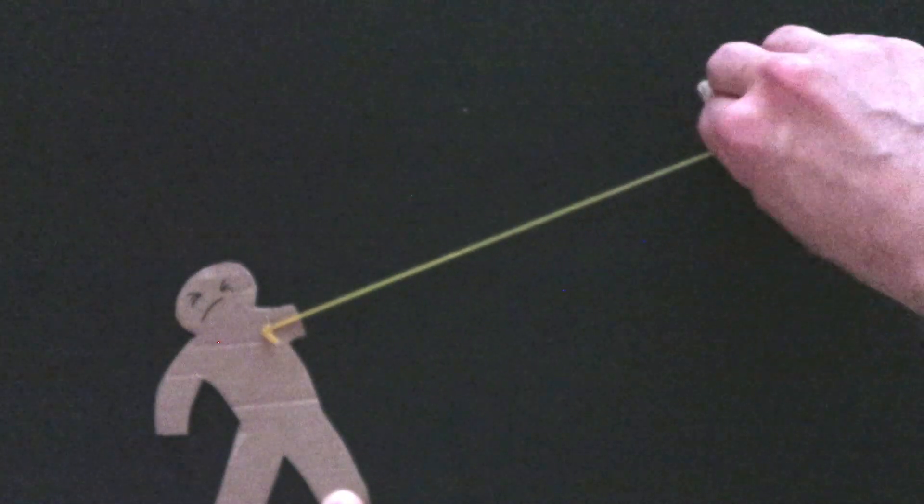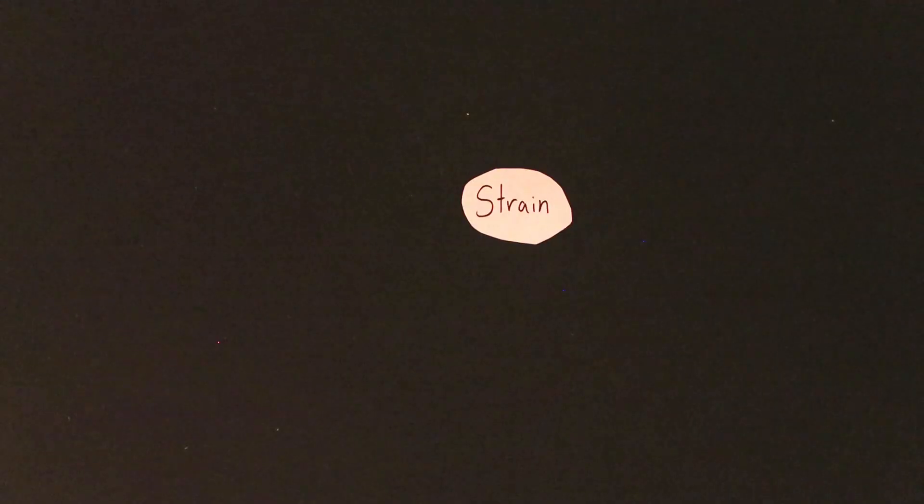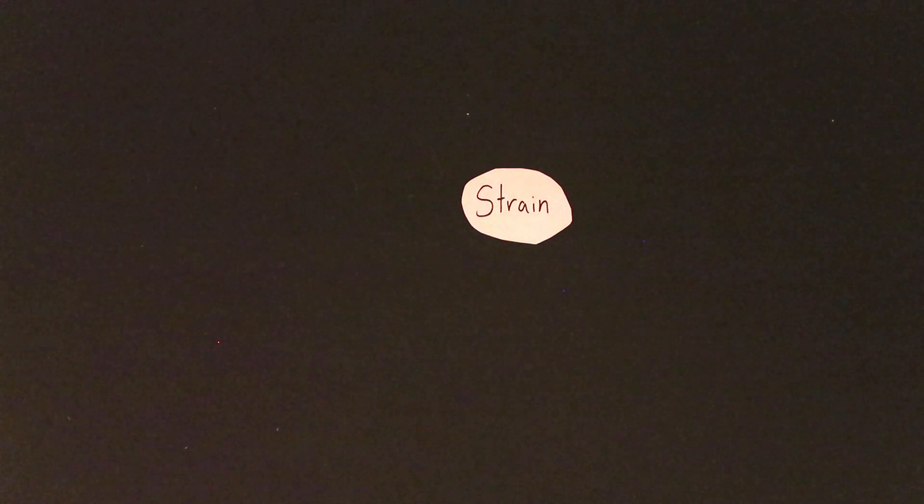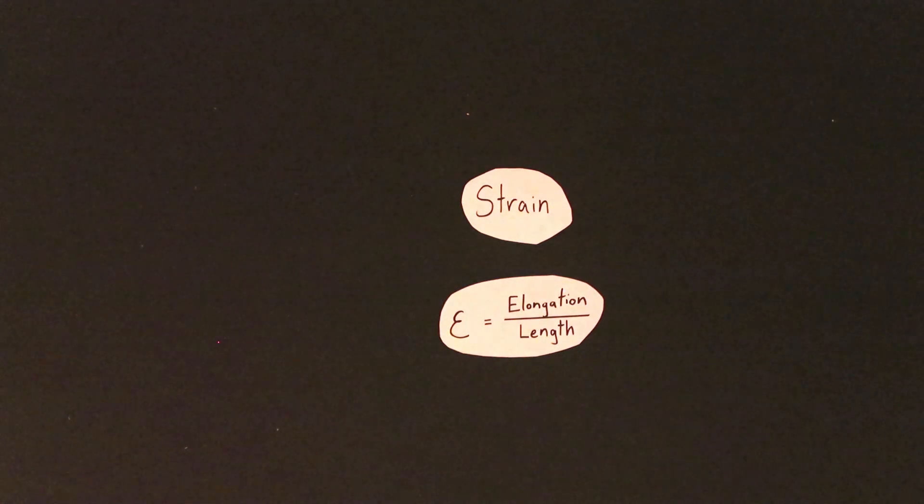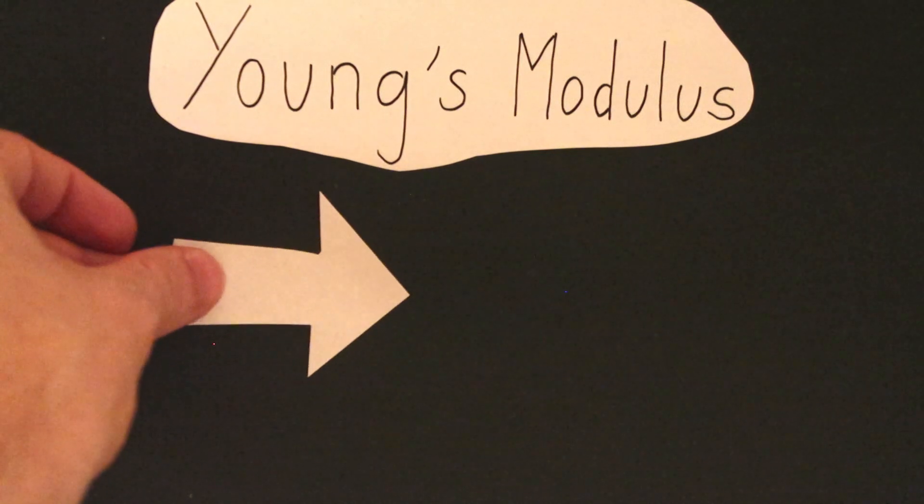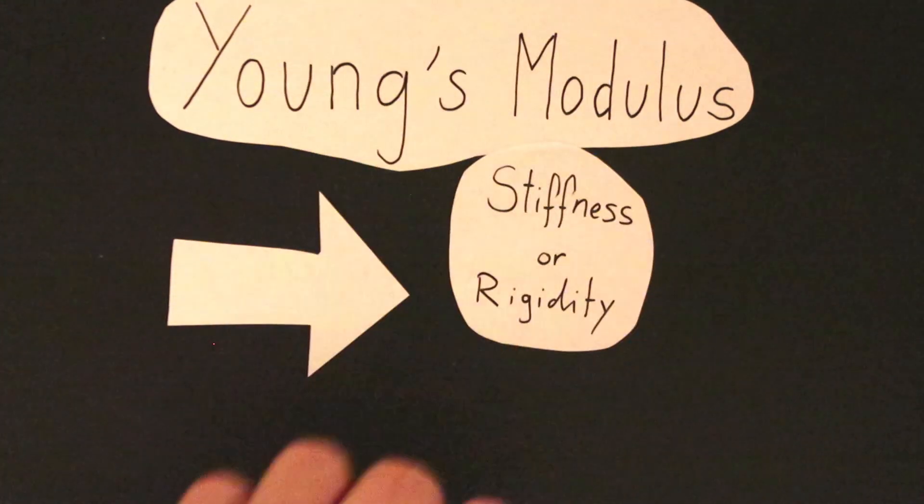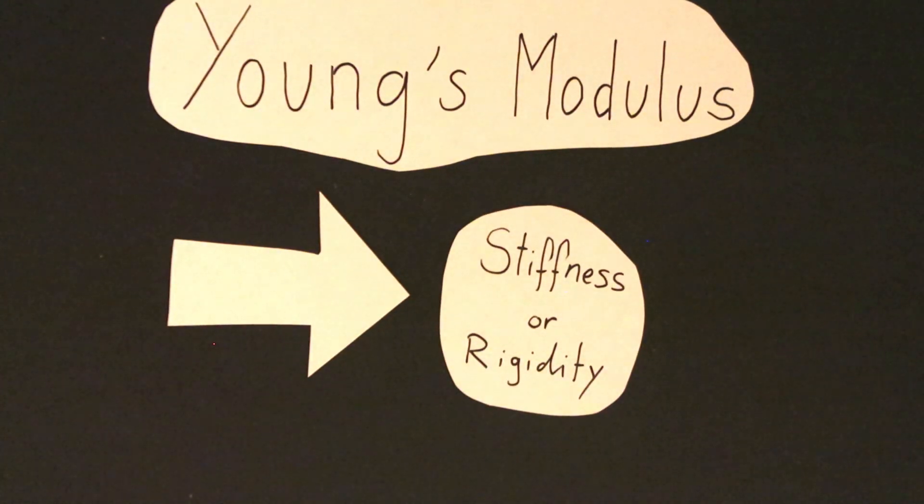Of course when pulling on an object this object elongates. Equivalently the longer the object the longer is the elongation. In physics we define strain as the elongation over the original length. The Young's modulus therefore gives you an idea of how stiff a material can be in relation to an applied force.